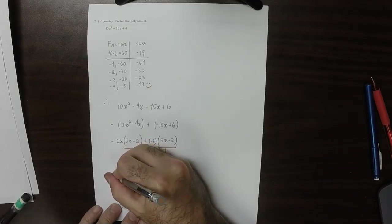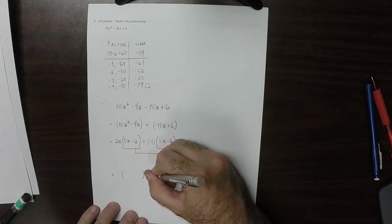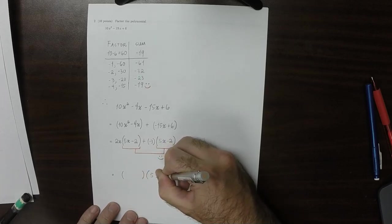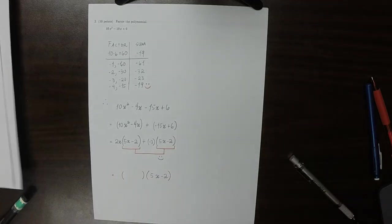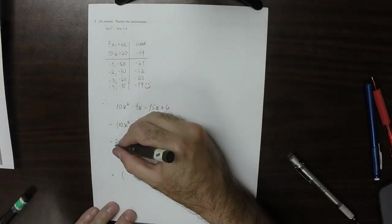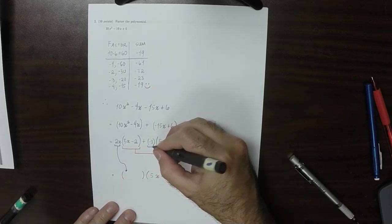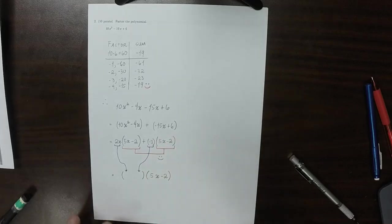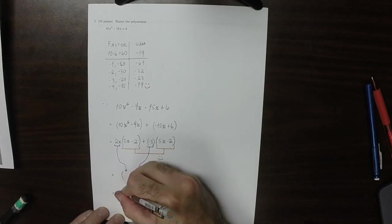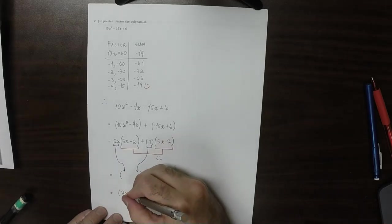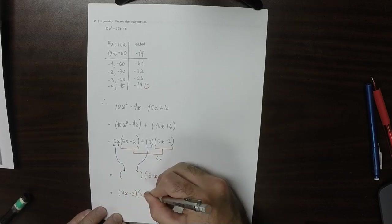So that means that we should be able to factor out 5x minus 2. And then all the other stuff should fall into place. So this will go here, and this one here. And it yields 2x minus 3 multiplied by 5x minus 2.